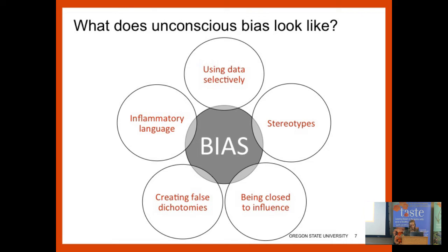It's okay — we just have to figure out what to do. Some of the ways bias shows up, especially in plant clinic, include using data selectively — picking and choosing what we want to share — also using inflammatory language, creating false dichotomies where it's either this or that when most of the time these issues are kind of a both-and or a spectrum, stereotyping, and really being closed to influence from others. That's a really big way that bias plays out.